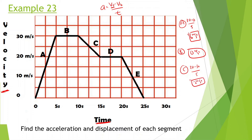For segment D, we're staying at the same speed — 20 meters per second — so that's zero meters per second squared. For segment E, we started at 20 meters per second and ended at zero, so it's zero minus 20 over 5 seconds, equal to negative 4 meters per second squared.